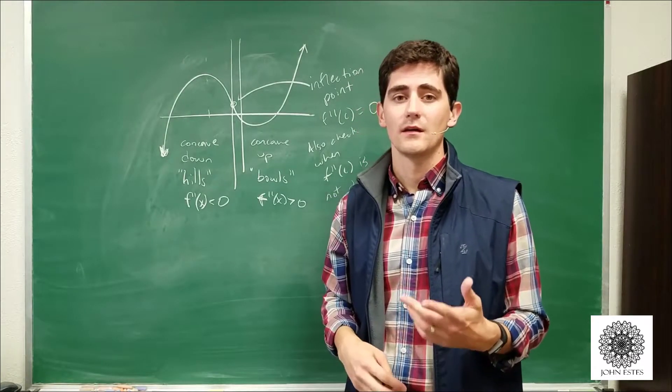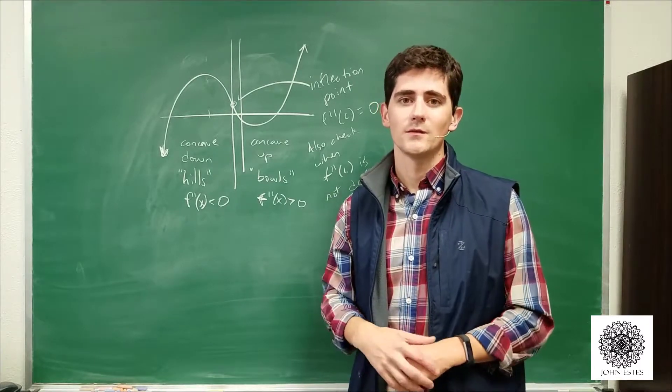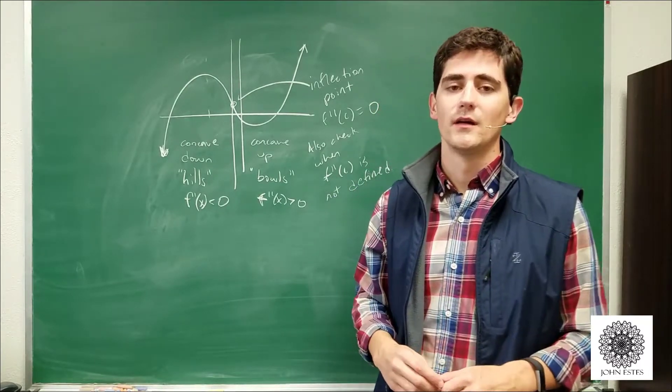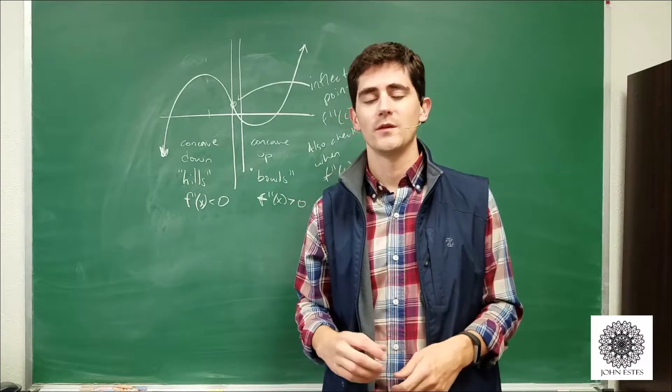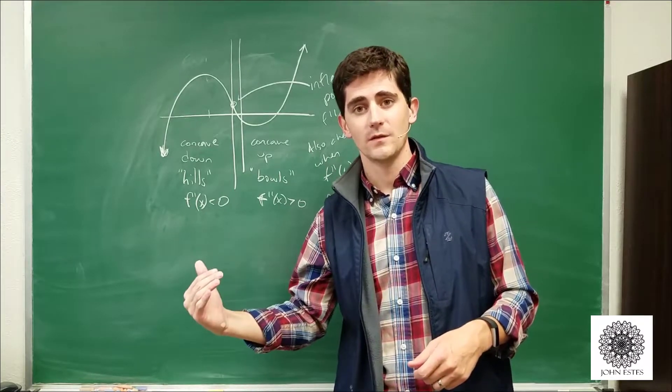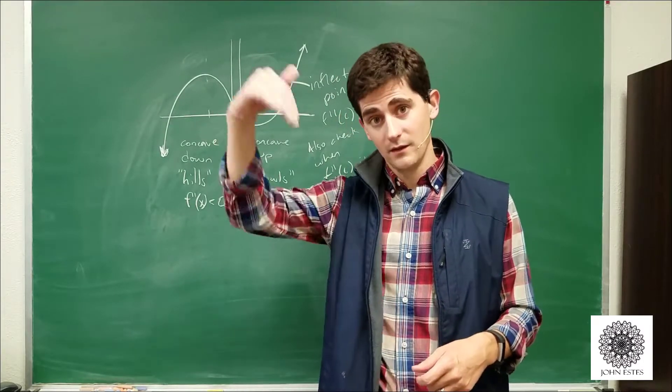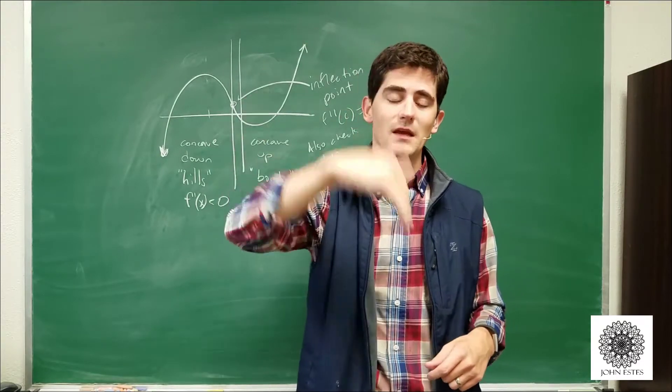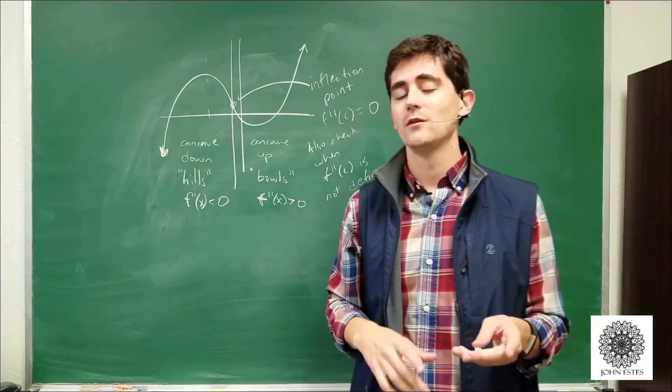In addition to determining concavity, your second derivative can also help you find local extrema. From the first derivative test, we know that as the derivative goes from negative to positive, we have a local min. If it goes from positive to negative, we have a local max. You can do a similar